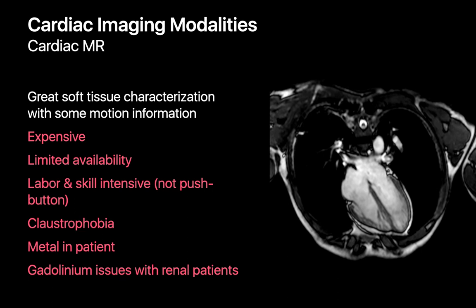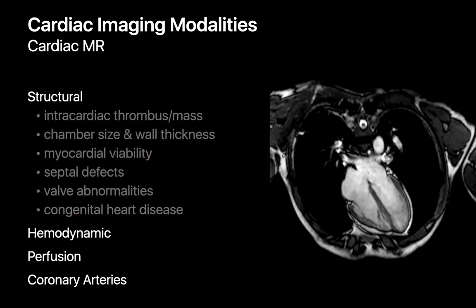When these hurdles are overcome, you have a modality that allows you to assess cardiac structure — like identifying if there's a mass or thrombus in a cardiac chamber, size and wall thickness of cardiac chambers, myocardial viability, septal defects, valve disorders, and congenital heart disease. Cardiac MR also allows us to assess other facets of the heart, but may be somewhat less competitive relative to other imaging modalities.